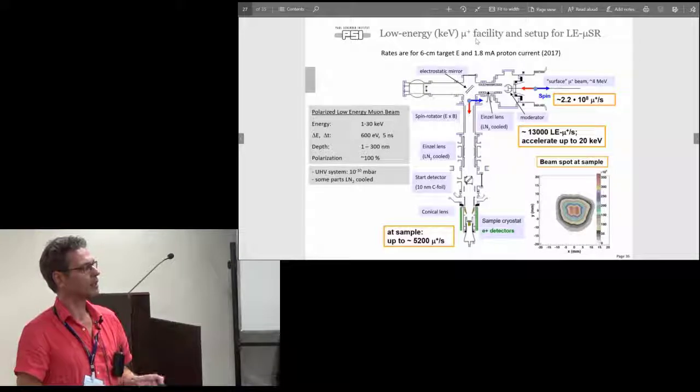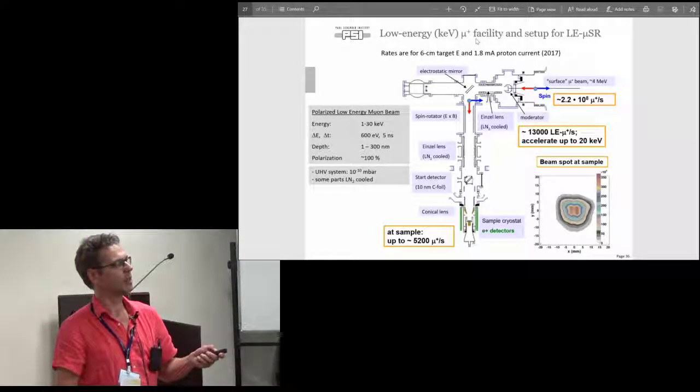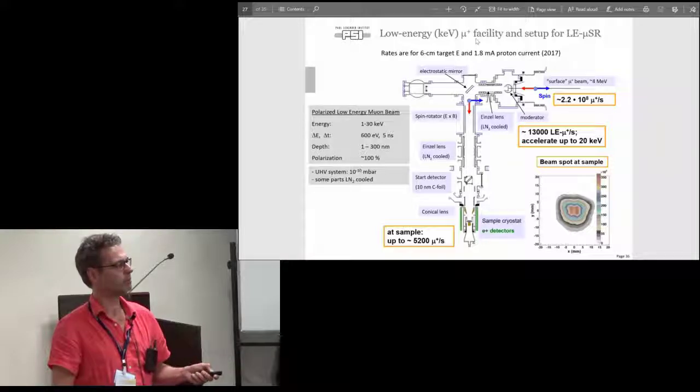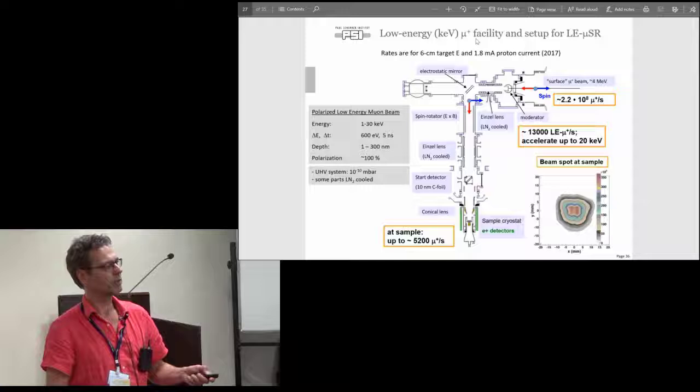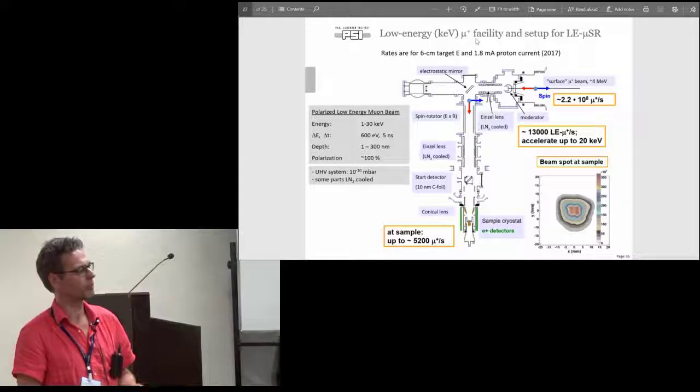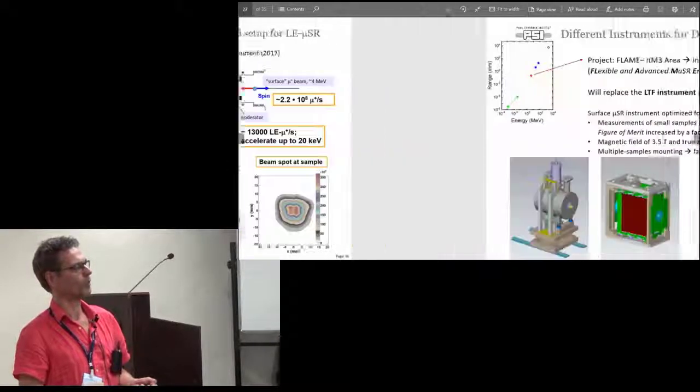This is a sketch of this low energy muon facility. We have here the moderator where we have more than 200 million muons per second hitting the moderator. Then by an electrostatic transport system we bring the muons to the sample where we have about 5000 per second. Relatively large beam spot because the phase space of the beam at the beginning is already quite large. Then there's a detector which further blows up the phase space, which makes the focusing a bit more difficult.